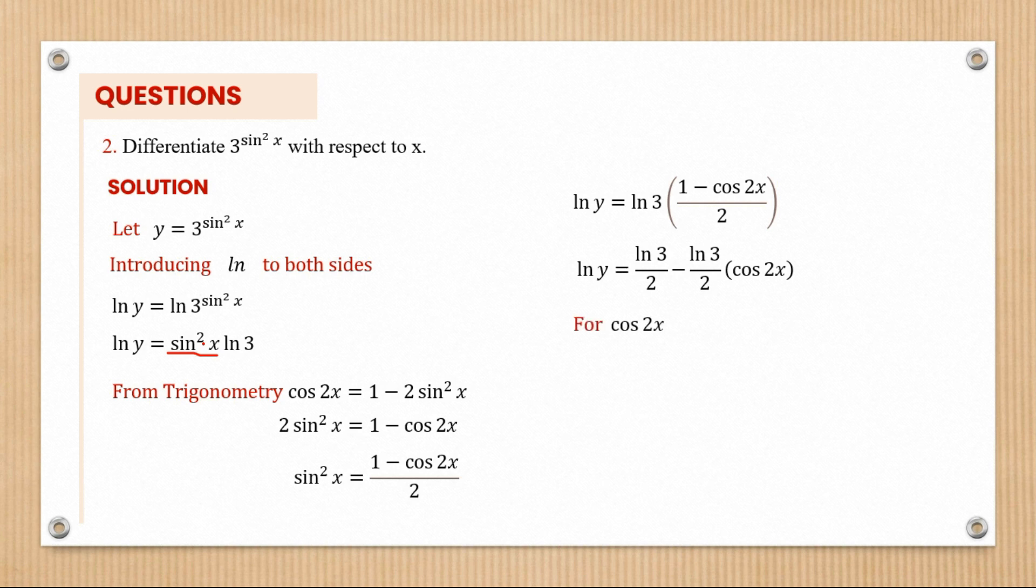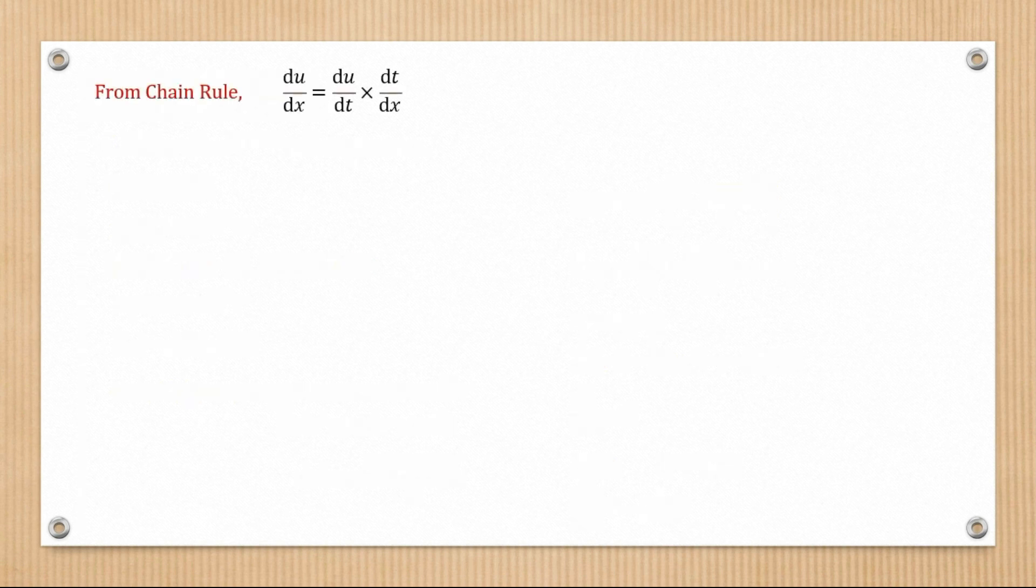Now we can get the derivative of cos 2x using chain rule. We're going to let t be 2x and u be cos 2x. So dt/dx is 2, and u is cos t. Then du/dt is negative sin t.